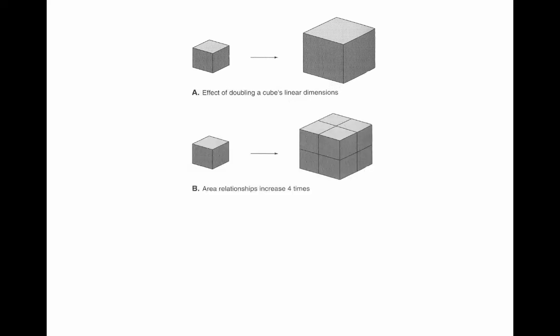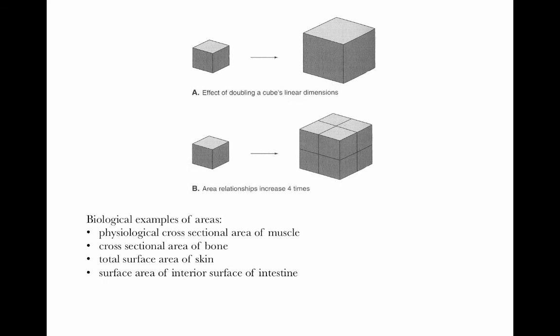Now let's see what happens to the surface area of this cube when we double the side length. Biological examples of areas include the physiological cross-sectional area of muscle, which determines how much force that muscle can produce, the cross-sectional area of bone, the total surface area of skin, and the interior surface of absorption surfaces such as the intestine, lungs, and gills.